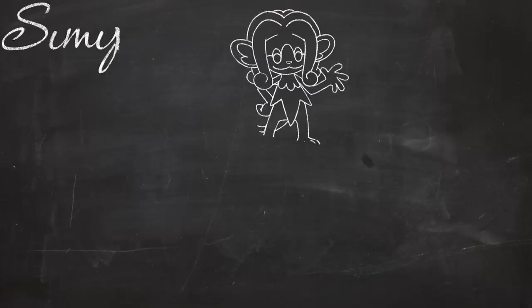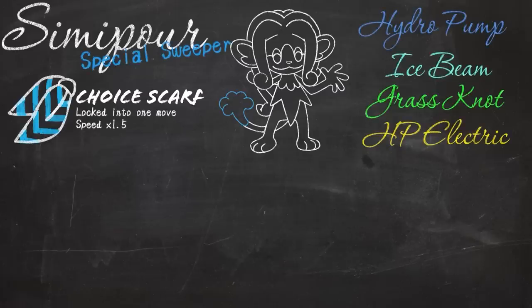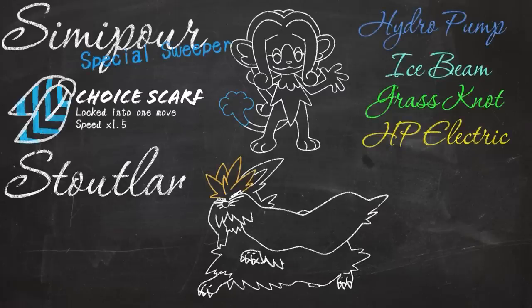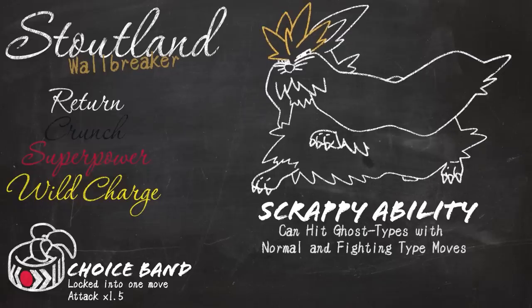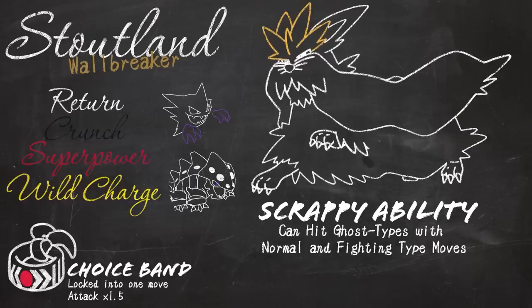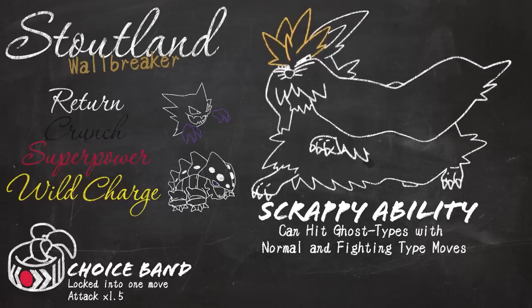So I decided to pick up Simipour, a somewhat common Scarfer that gave me good coverage with Water and Ice moves, and Stoutland, a known physical threat that could plow through walls with a Choice Band equipped. Scrappy gave Stoutland an extremely good matchup versus Haunter, who was ubiquitous in the tier. This meant that he could use STAB Returns to chunk any team, or if they had Lickilicky, he could fire off his Superpower and still hit Haunter on the switch-in. Resisted or not, this was a death sentence for Haunter that made piloting Stoutland pretty foolproof.